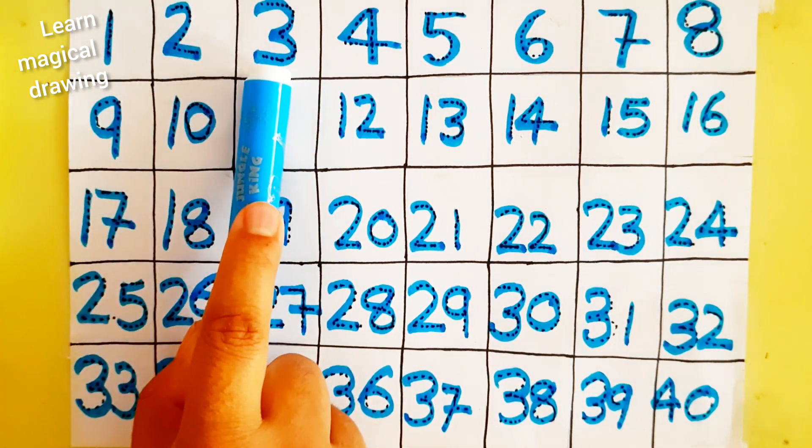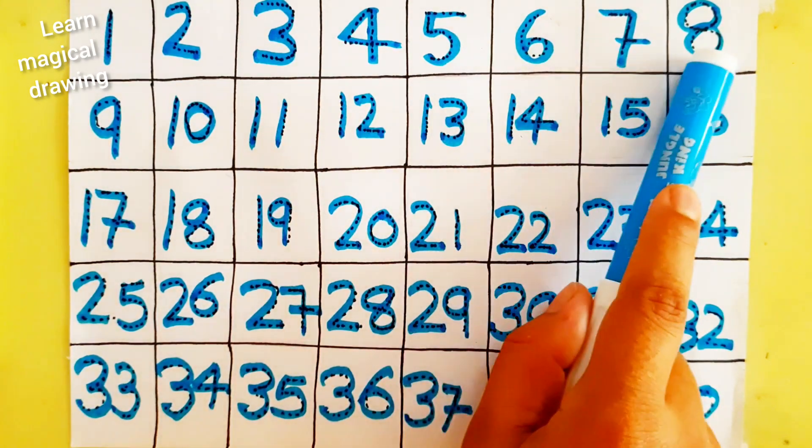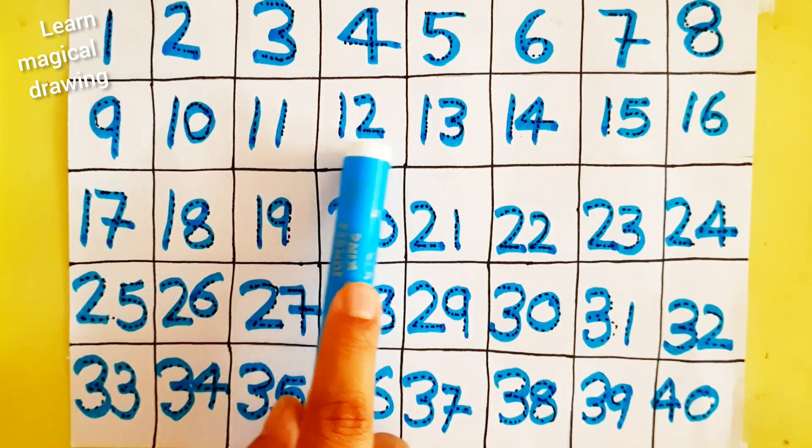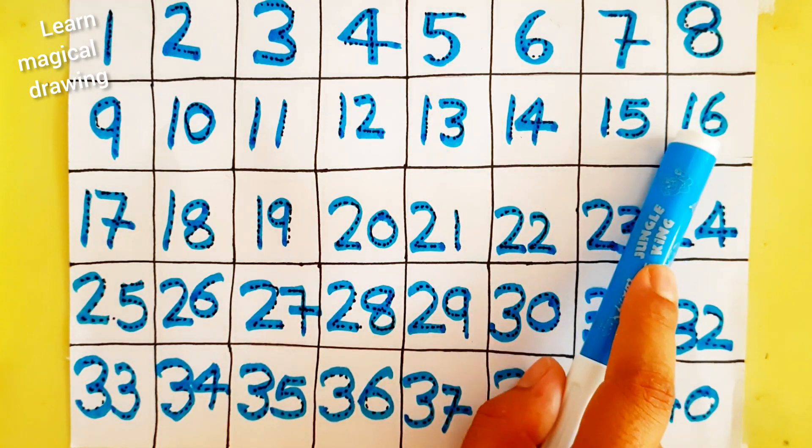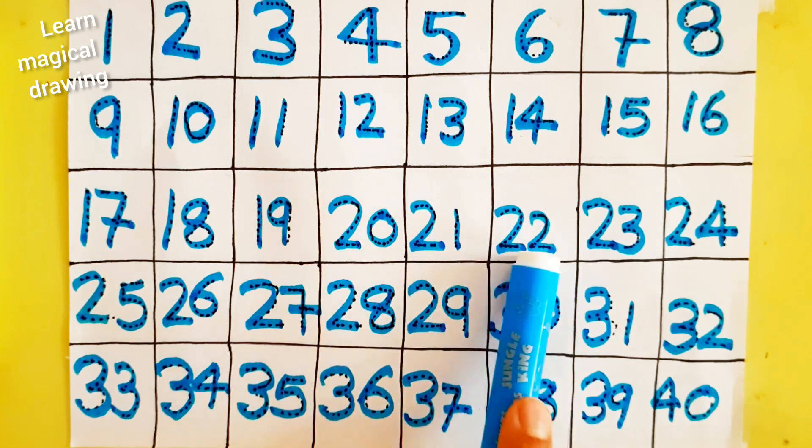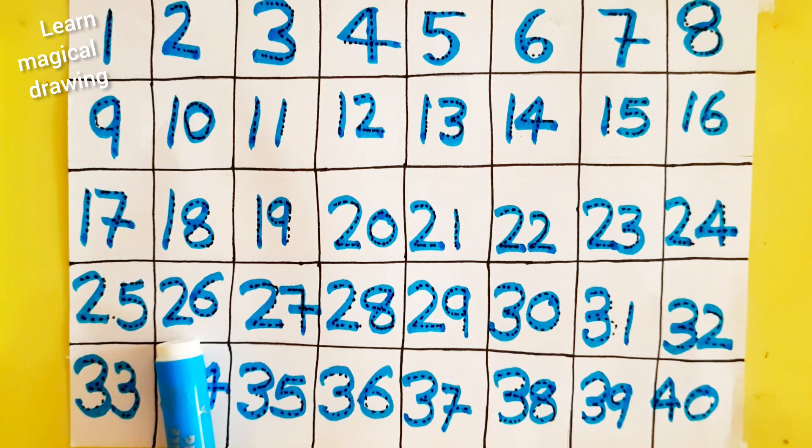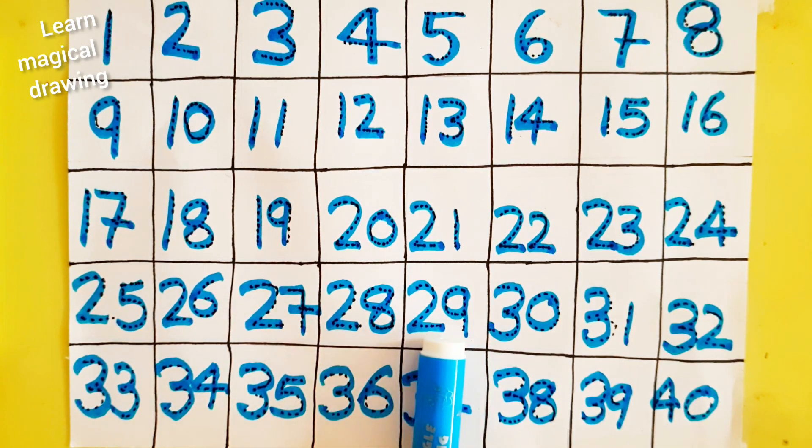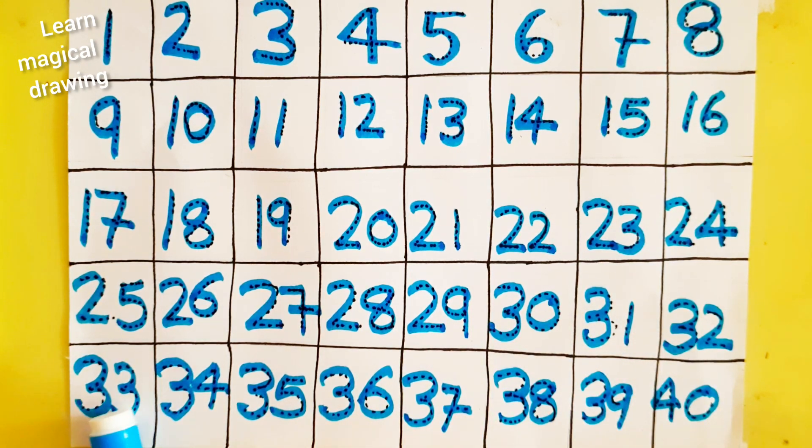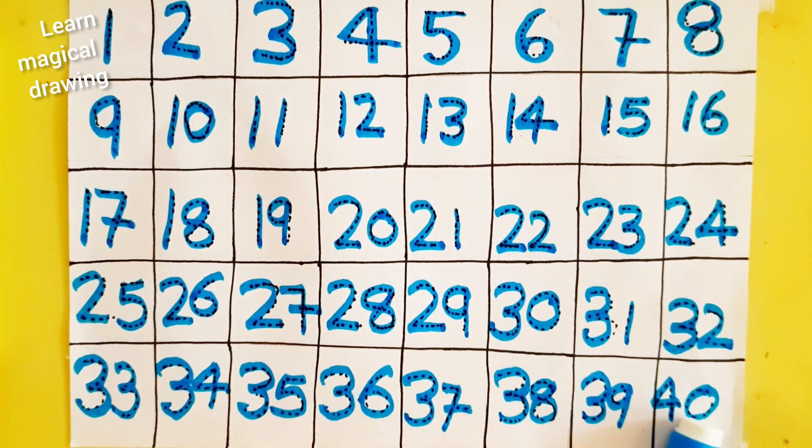1, 2, 3, 4, 5, 6, 7, 8, 9, 10, 11, 12, 13, 14, 15, 16, 17, 18, 19, 20, 21, 22, 23, 24, 25, 26, 27, 28, 29, 30, 31, 32, 33, 34, 35, 36, 37, 38, 39, 40.